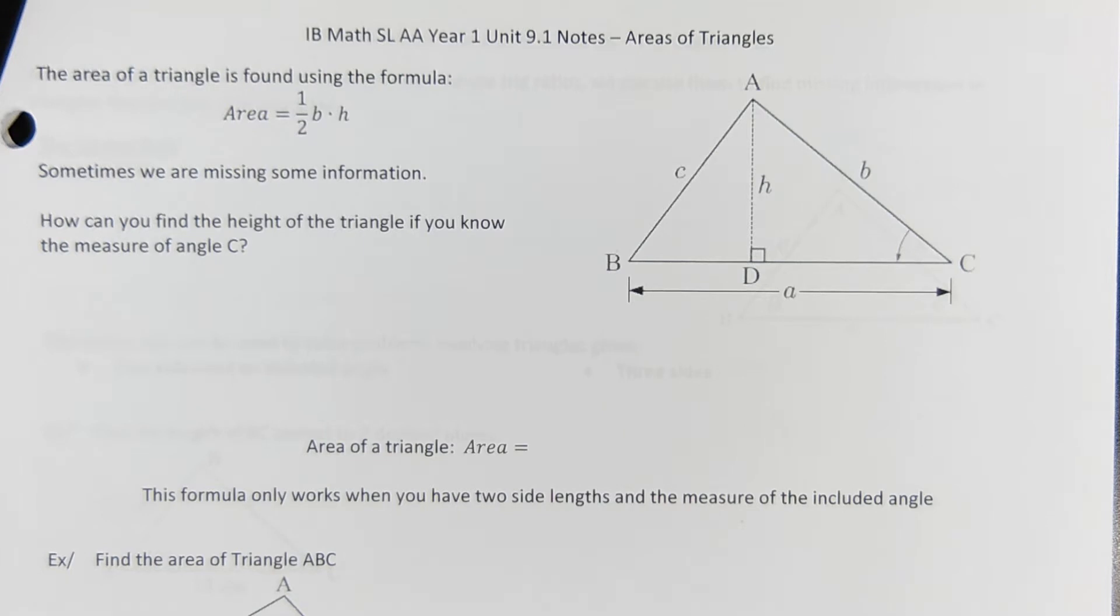The area of a triangle is one half base times height. This one's standard, but when you don't have the base or you don't have the height, you have to do what we did on the review, which was a colossal pain in the butt. That was to drop an altitude and to play a game with trigonometry and inverse trigonometry to find the other side lengths. So sometimes you can be missing information. How can you find the height of this triangle if you know the measurement of angle C?